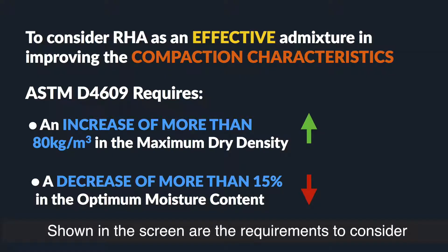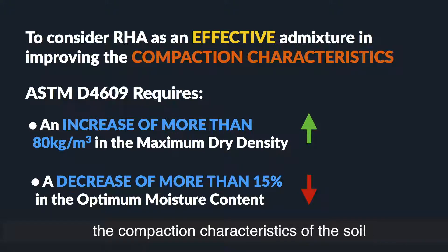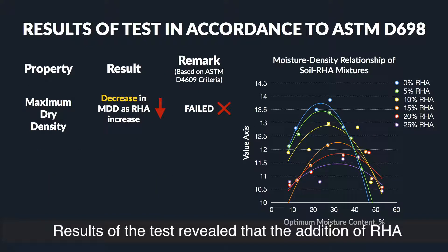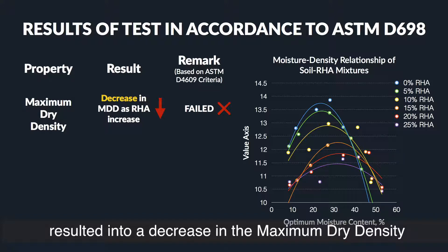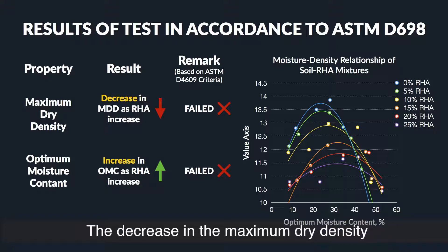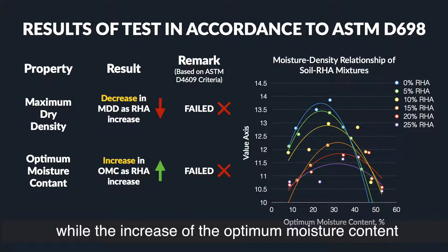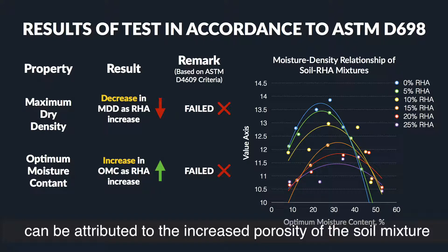Shown on screen are the requirements to consider RHA as an effective admixture in improving the compaction characteristics of the soil. Results of the test revealed that the addition of RHA resulted in a decrease in the maximum dry density and an increase in the optimum moisture content. The decrease in maximum dry density can be attributed to the additional voids introduced by the RHA, while the increase in optimum moisture content can be attributed to the increased porosity of the soil mixture.